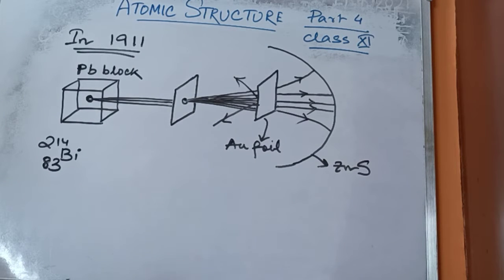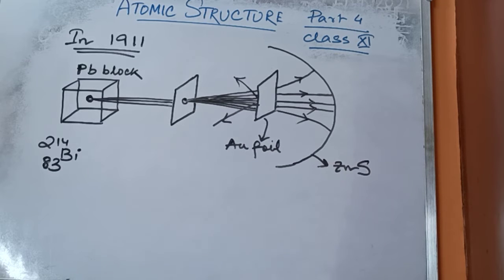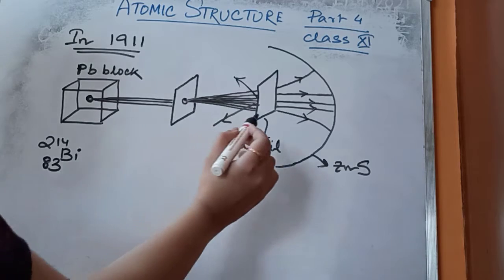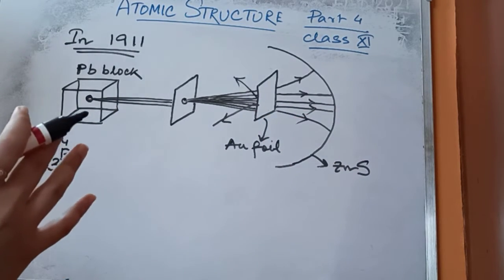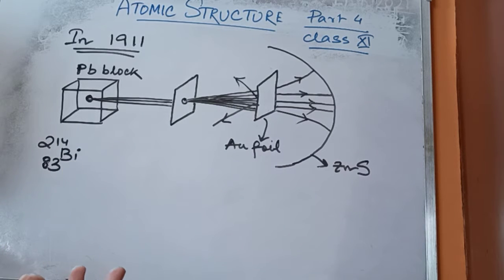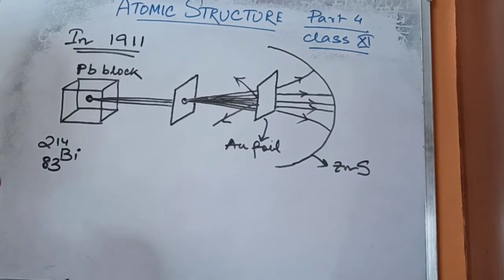These observations led to certain conclusions. He said that the atom has maximum free space. Since the atom has maximum free space, maximum alpha particles will pass through the gold foil undeflected — no deflection occurs because the atom has free space inside.